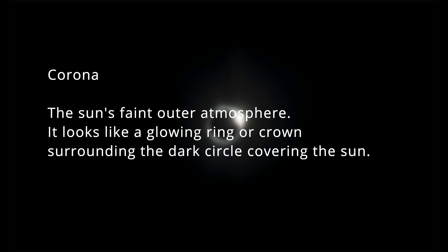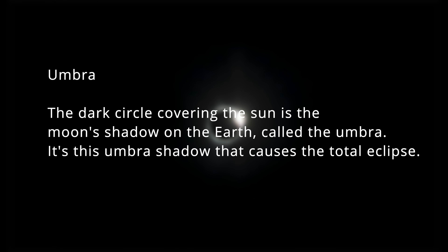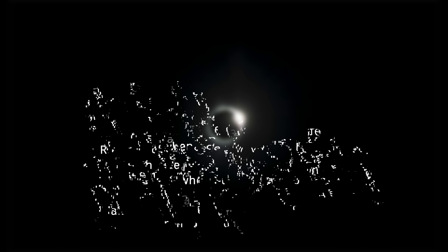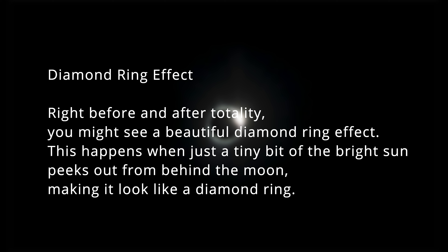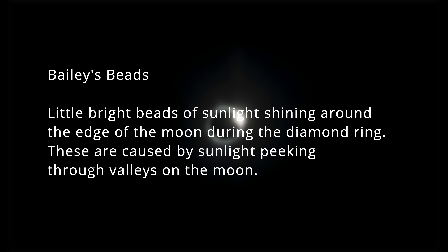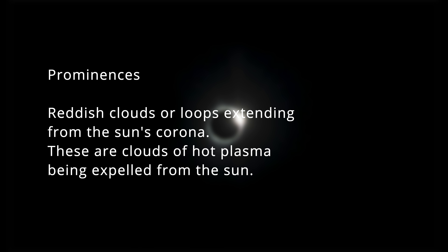Totality is where the sky darkens and the corona becomes visible. The corona is the sun's faint outer atmosphere — it looks like a glowing ring or crown surrounding the dark circle covering the sun. That dark circle is the moon's shadow on the earth, called the umbra, and it's this umbra that causes the total eclipse. Right before and after totality, you might see the diamond ring effect, when a tiny bit of sunlight peeks from behind the moon. Bailey's beads are bright beads of sunlight shining through valleys on the moon's edge. Prominences are reddish clouds or loops of hot plasma extending from the sun's corona.